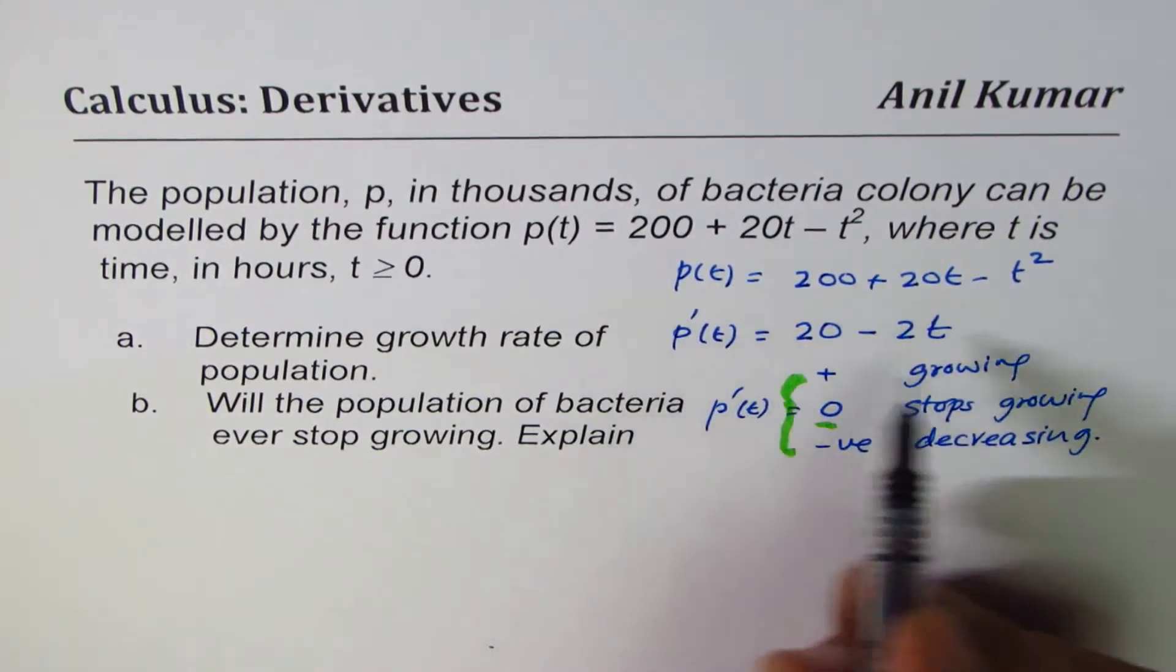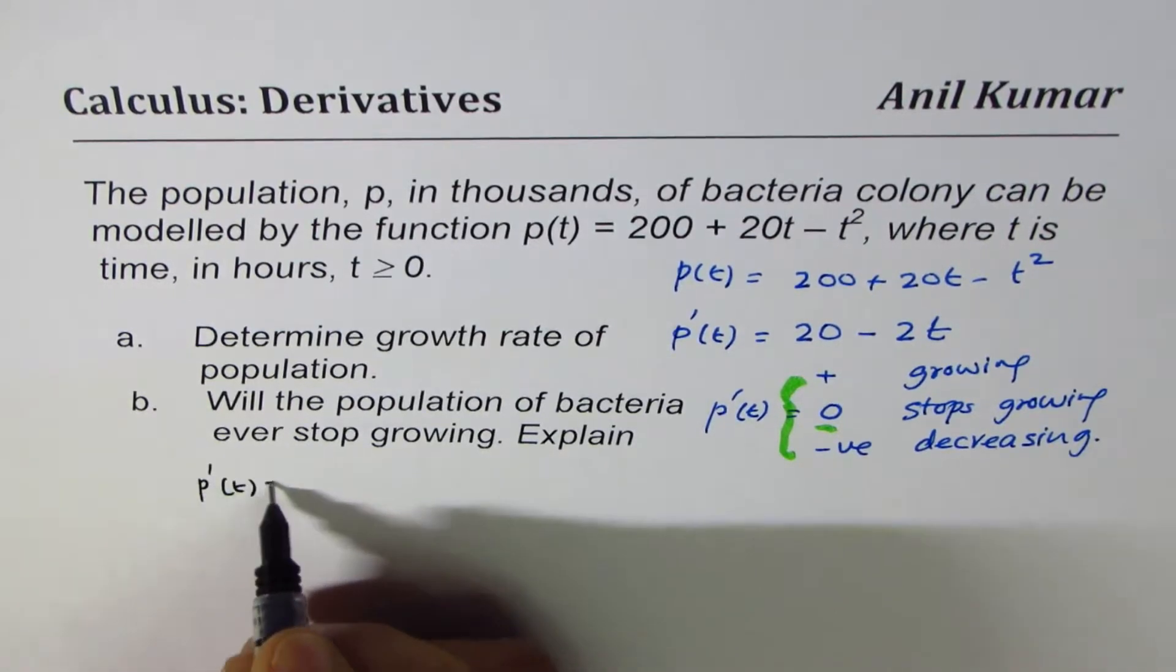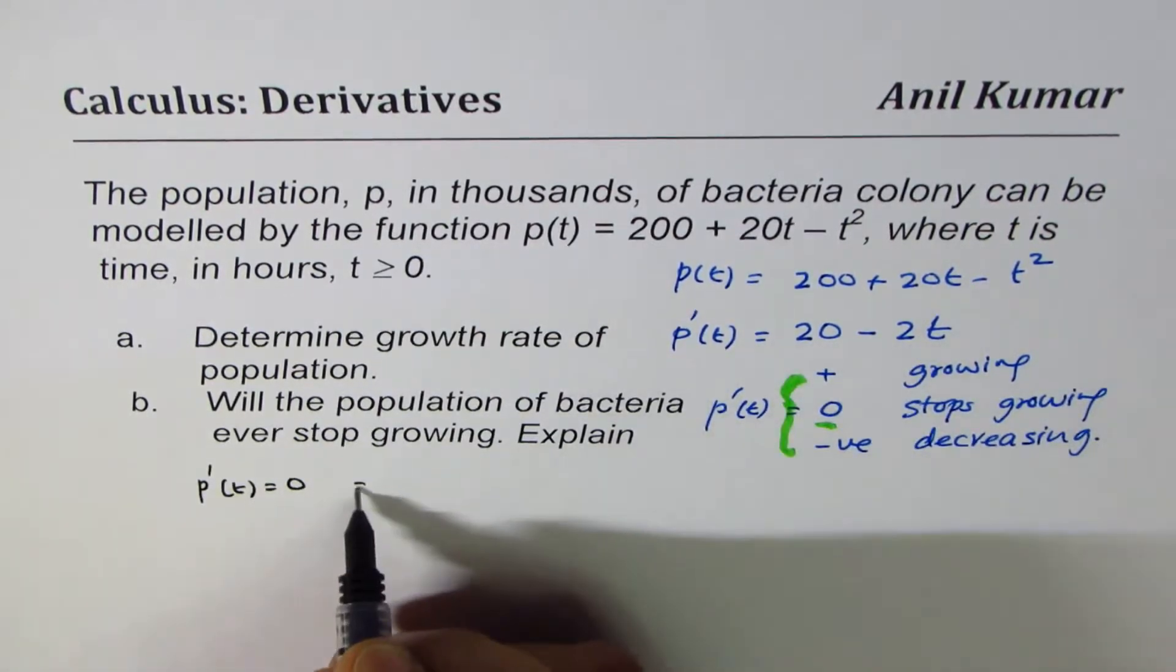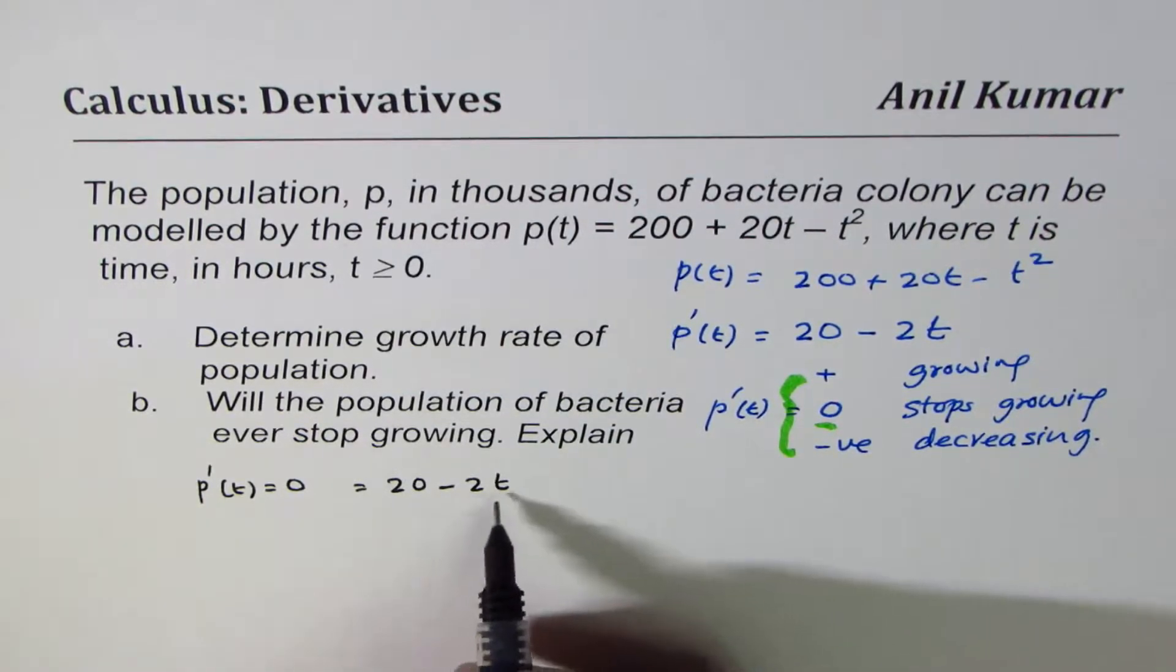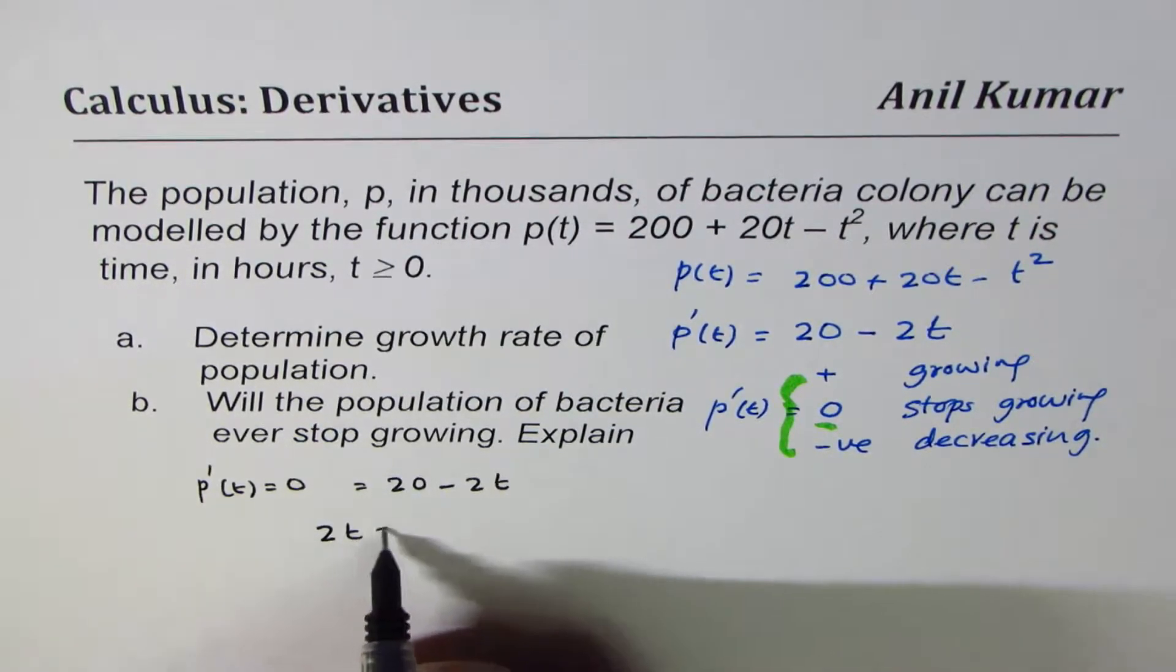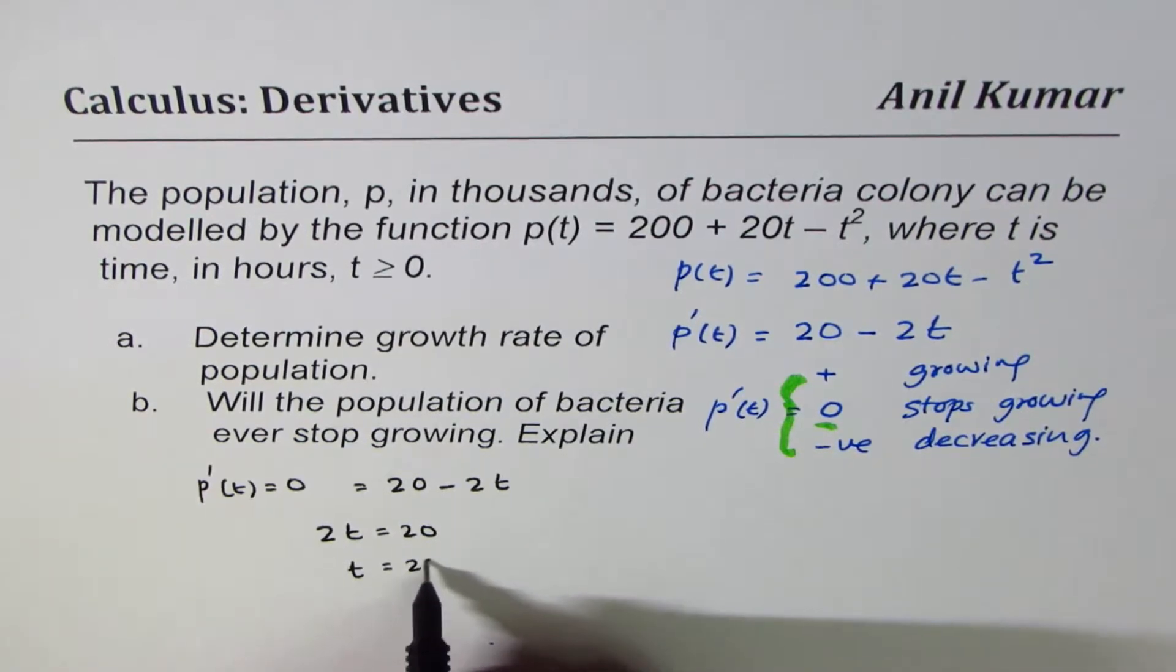P'(t) = 0, which is 20 - 2t. Now we can bring 2t on this side, equals to 20, so t equals 20 by 2, which is 10.